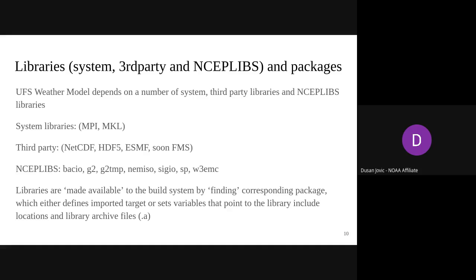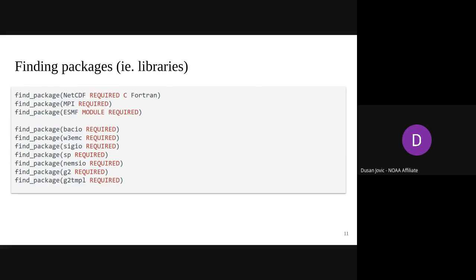The UFS weather model depends on system libraries such as MPI and MKL, third-party libraries such as NetCDF, HDF5, ESMF, and FMS, and a number of NCEP libraries. These libraries are made available to the build system by finding the corresponding package, which defines imported CMake targets providing include and library directories, or sets environment variables for backward compatibility. The find_package function from CMake is used to load NCEP libraries, with all packages labeled as required. For NetCDF, we also specify the needed components — C and Fortran — while C++ is not needed.